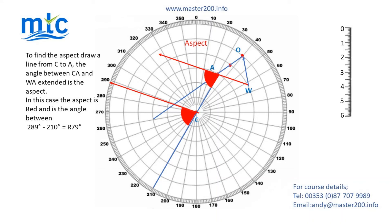The angle between C and A and W-A Extended is the aspect. In this case, the aspect is red — the angle is between 289 degrees minus 210 degrees, giving red 79 degrees.